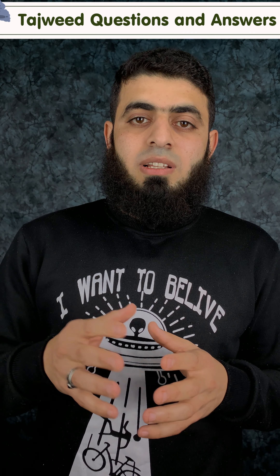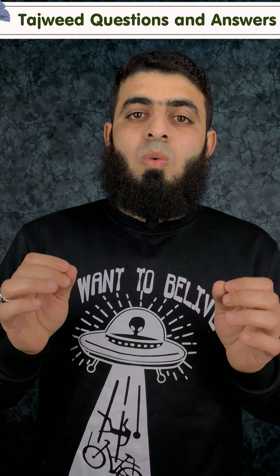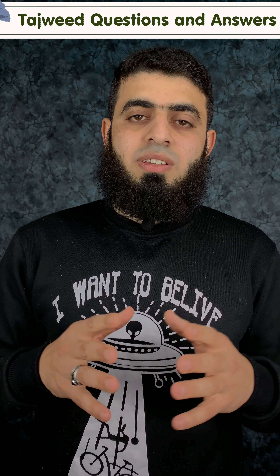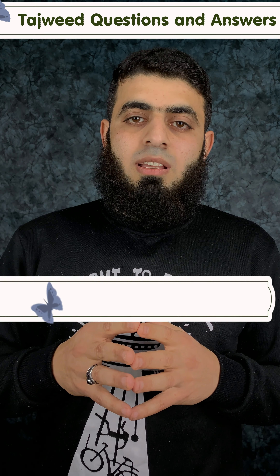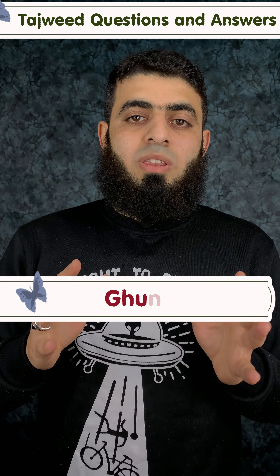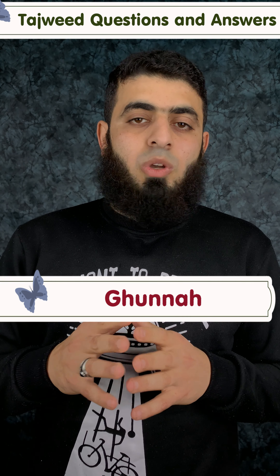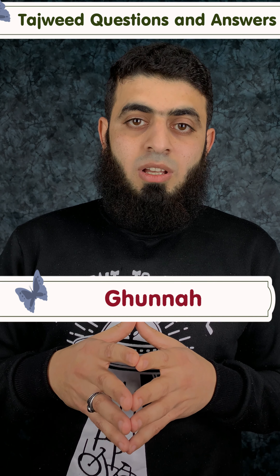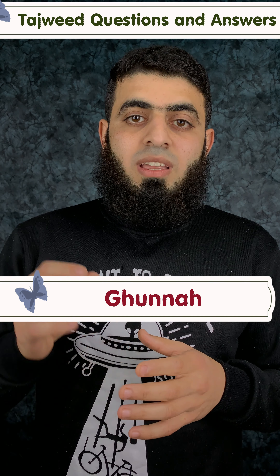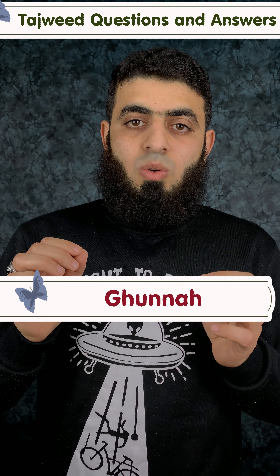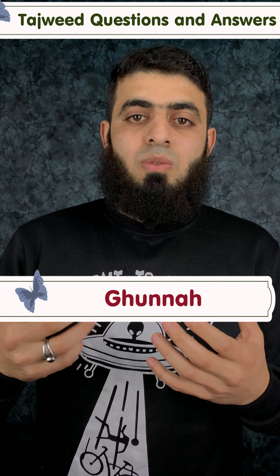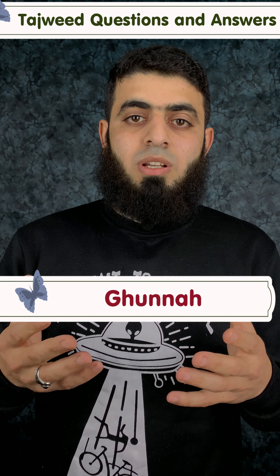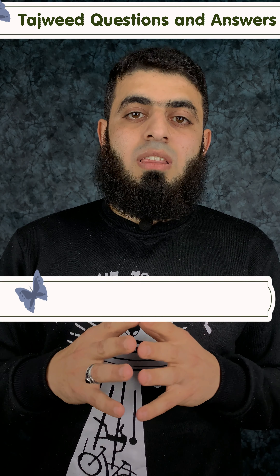The right of a letter is the quality that never leaves the letter. For example, ghunna is always with meem and noon. We cannot imagine noon or meem without ghunna. So this quality — ghunna — is a right for meem and a right for noon, because it never leaves them.